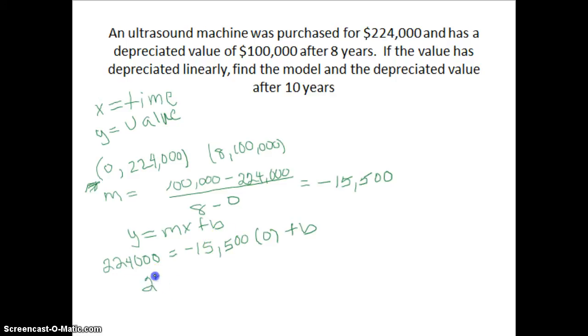That allows me to solve real easily that 224,000 is my b value. And again, that follows intuition. b is when time is 0. That would be on the y-axis and b is the y-intercept. So I knew that from this ordered pair before I did the math.